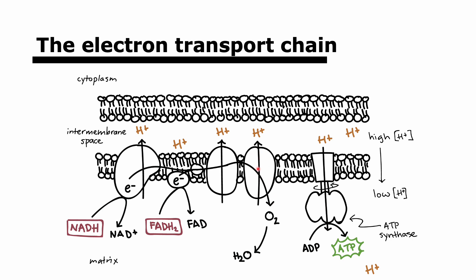Finally, the electrons in the electron transport chain need somewhere to go after they've jumped — this is where oxygen comes in. Oxygen is called the terminal electron acceptor: it takes the electrons at the end and hydrogen protons, making water. However, if there's no oxygen available, electrons are not removed from the final carrier, so they stack up. That means electrons cannot be accepted at the start of the chain, reduced NADH accumulates, and the link reaction and Krebs cycle stop. This is when anaerobic respiration kicks in. Instead of making 32 ATPs per molecule of glucose as in aerobic respiration, anaerobic respiration only makes two ATPs.